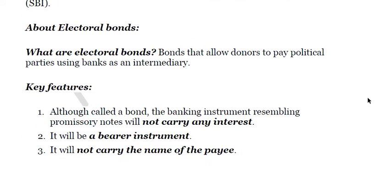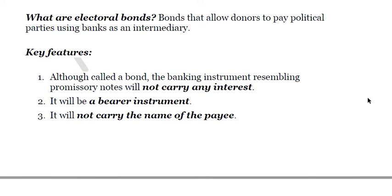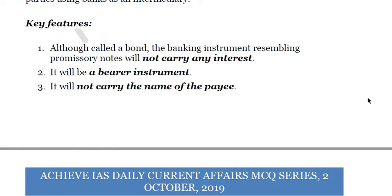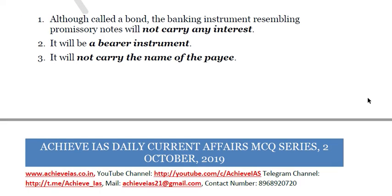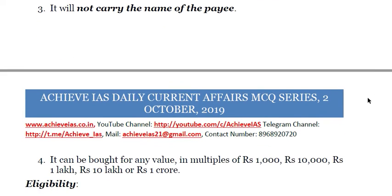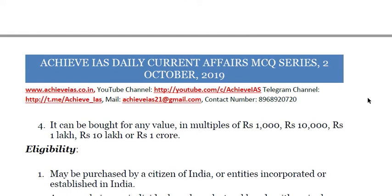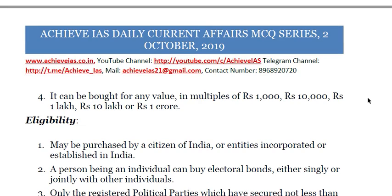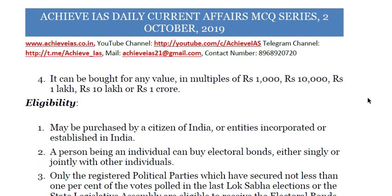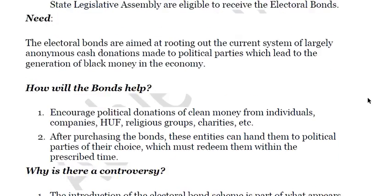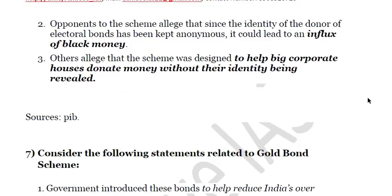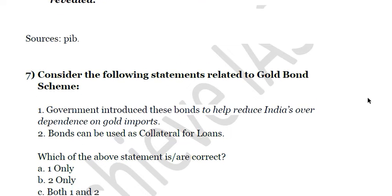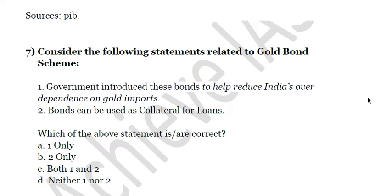Although called a bond, this banking instrument resembles a promissory note but will not carry any interest. It will be a bearer instrument and will not carry the name of the payee. It can be bought in any value in multiples of ₹1,000, ₹10,000, ₹1 lakh, ₹10 lakh, and ₹1 crore. There is also some controversy associated with it — you can pause the video to read more details.